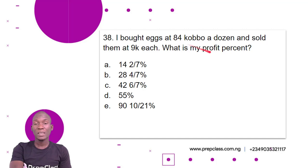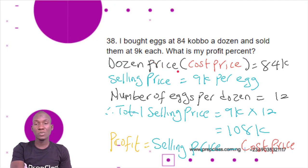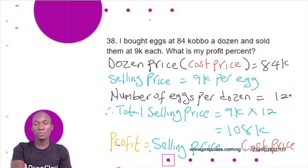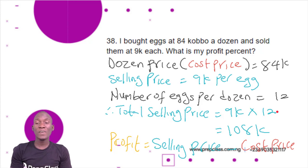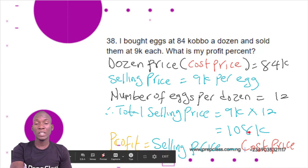We have to find the percentage profit. The cost price is 84 kobo per dozen — that is the amount spent buying a dozen eggs. The selling price is 9 kobo per egg. Since a dozen contains 12 eggs, the total selling price is 9 kobo multiplied by 12, which gives us 108 kobo.